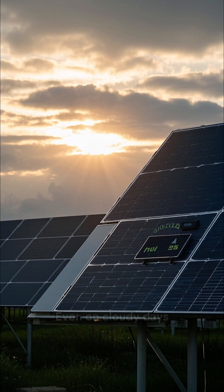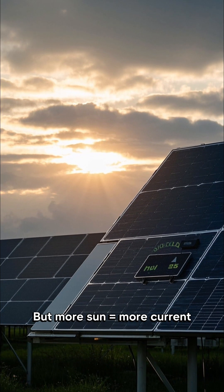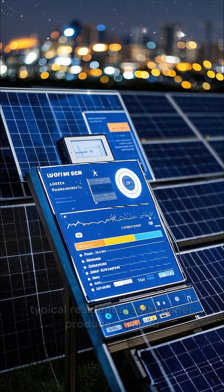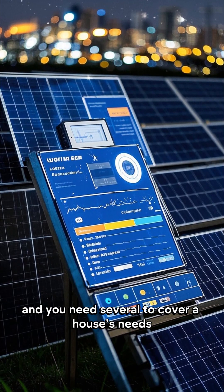Even on cloudy days, some photons get through. But more sun creates more current. A typical residential solar panel produces around 300-400 watts, and you need several to cover a house's needs.